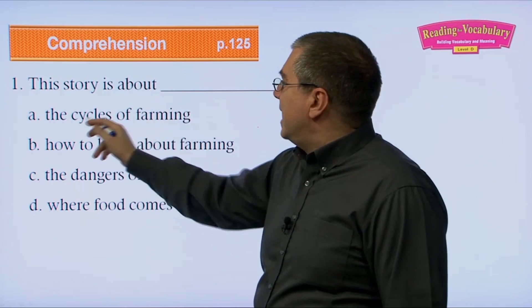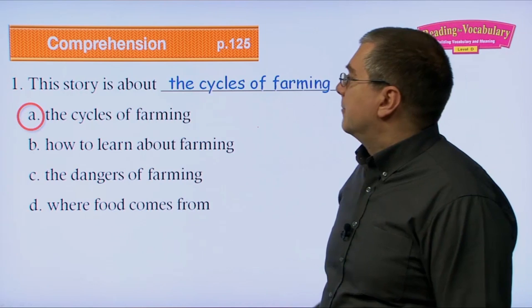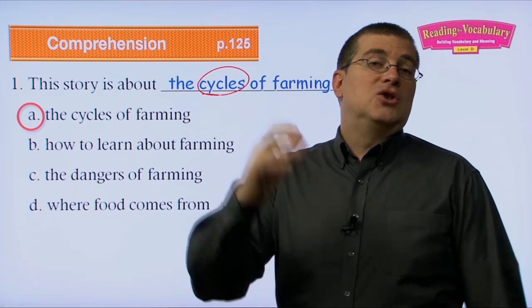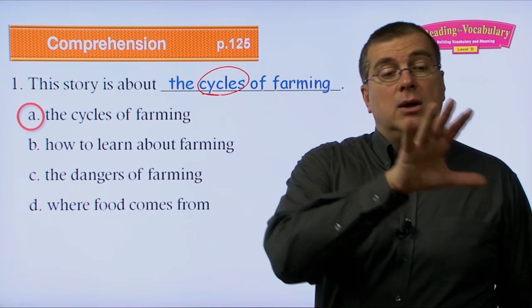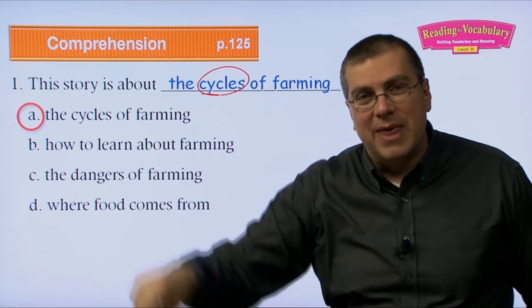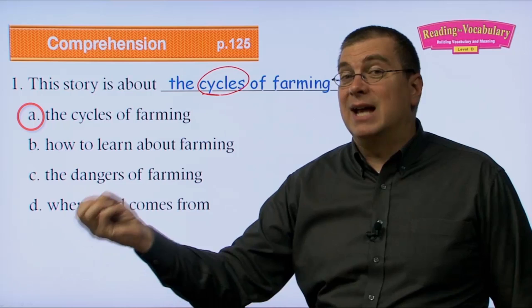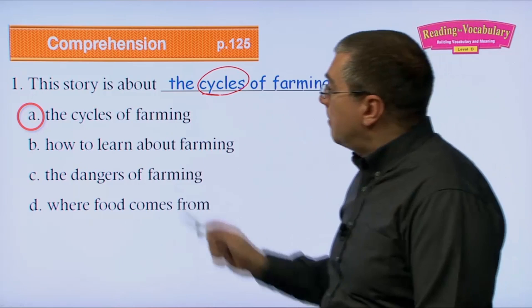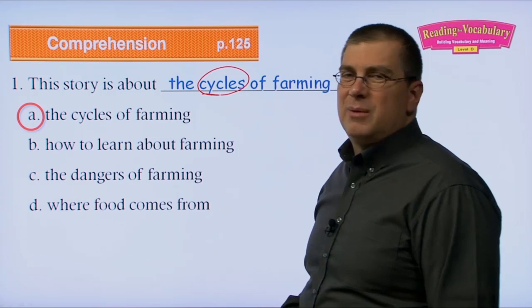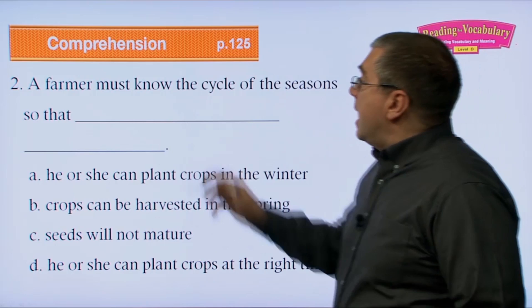What is this story about? A — the cycles of farming; B — how to learn about farming; C — the dangers of farming; D — where food comes from. The answer is A. This story is about the cycles of farming — not just when to plant in spring and harvest in fall, but also rotating crops across fields and the cycle of food passing through our bodies becoming manure and growing new food.